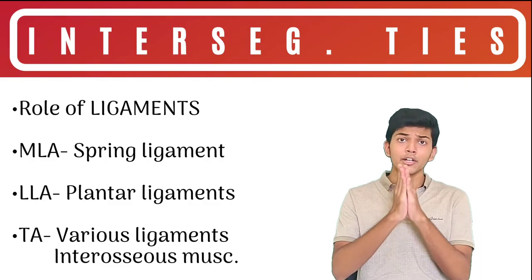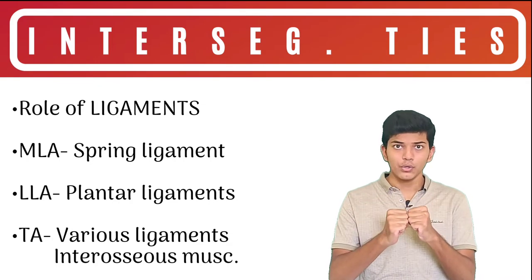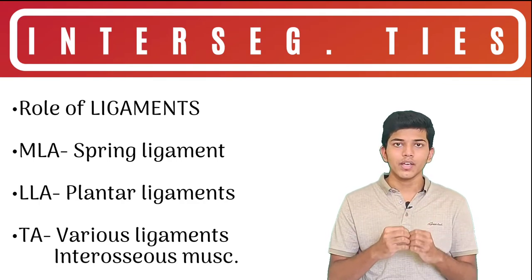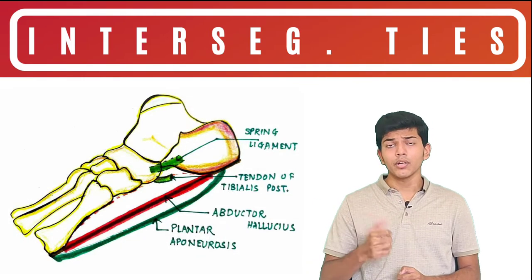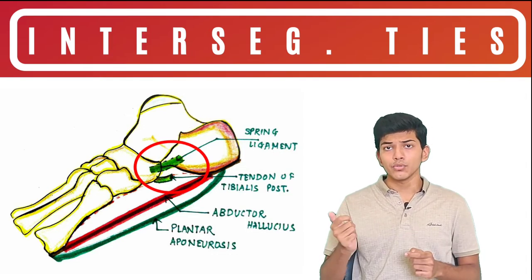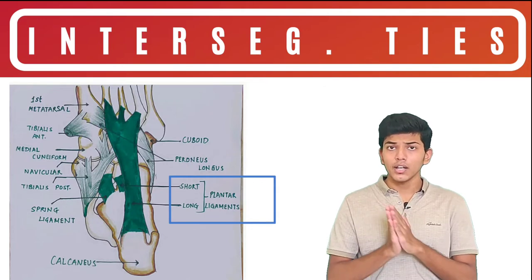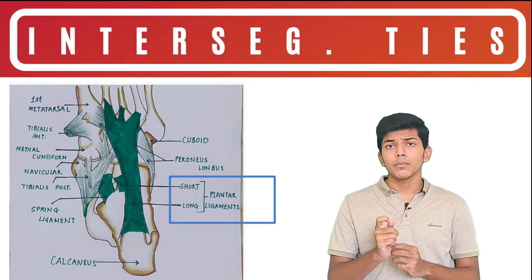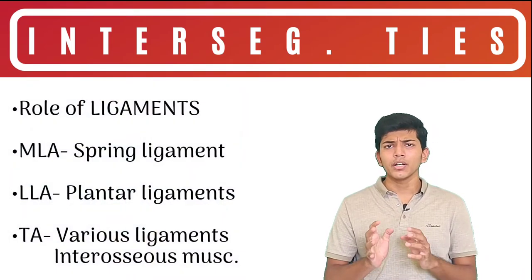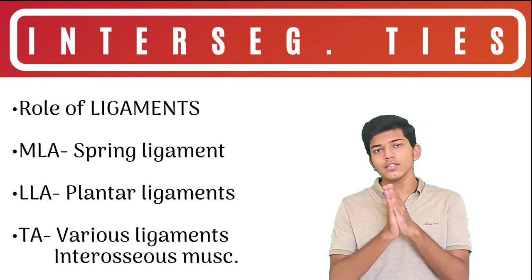Intersegmental ties help in binding different segments of the arch together. Ligaments play a very important role in binding the different bones of the arches. For the medial longitudinal arch, the spring ligament plays a very important role, as you can see in the diagram. For the lateral longitudinal arch, the long and short plantar ligaments help bind different bones together. For the transverse arch, various ligaments collectively help maintain the structure of both the anterior and posterior transverse arches.